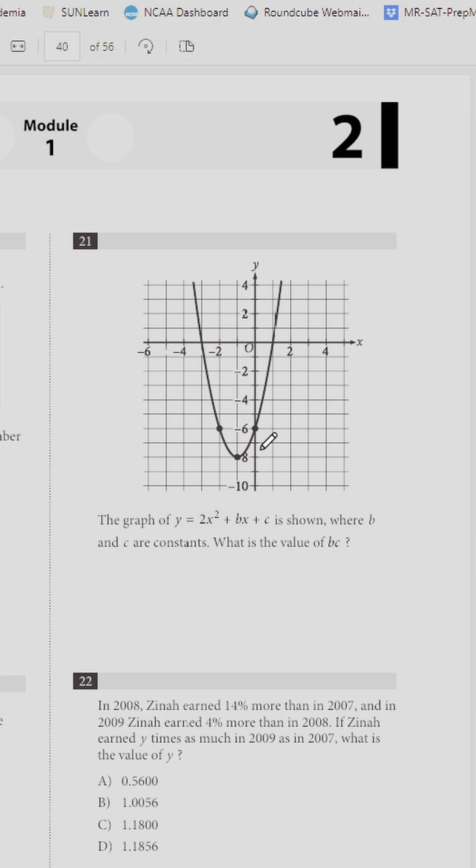For this equation, c is the y-intercept. As we can see, the y-intercept is -6, so c = -6.